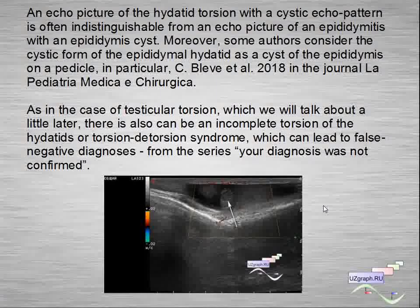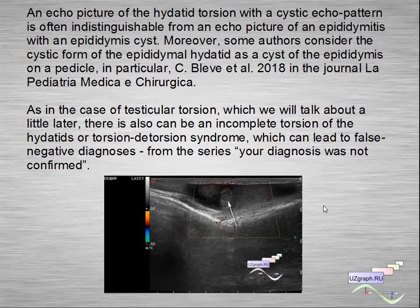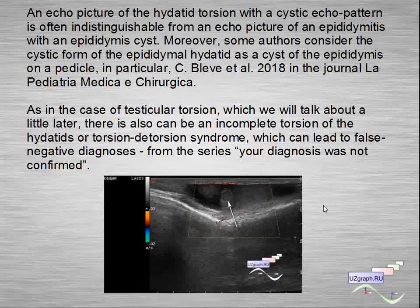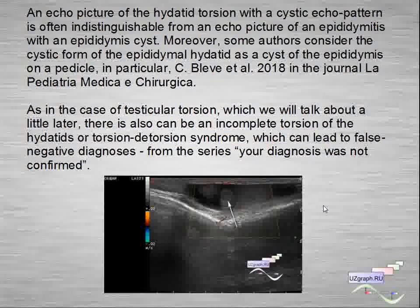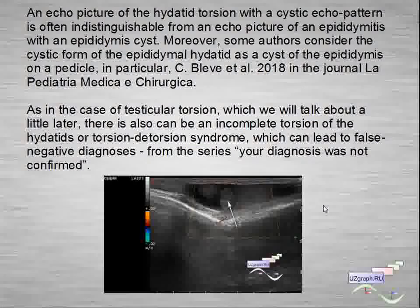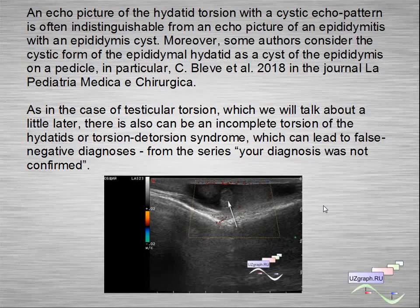An echo picture of hydatid torsion with cystic echo pattern is often indistinguishable from an echo picture of epididymitis with epididymis cyst. Moreover, some authors consider the cystic form of the epididymal hydatid to be a cyst of the epididymis on a pedicle. As in the case of testicular torsion, there can also be an incomplete or partial torsion of the hydatid, or torsion-detorsion syndrome, which can lead to false negative diagnosis where the diagnosis was not confirmed.